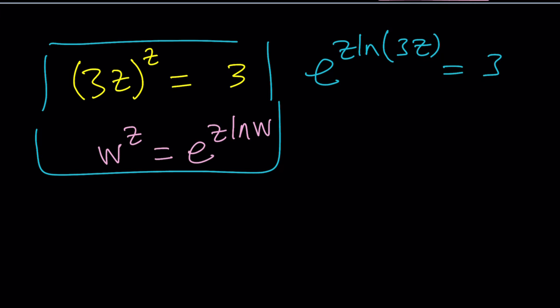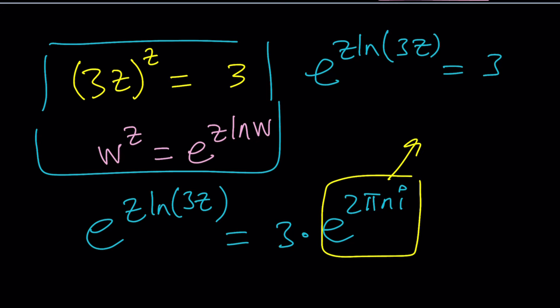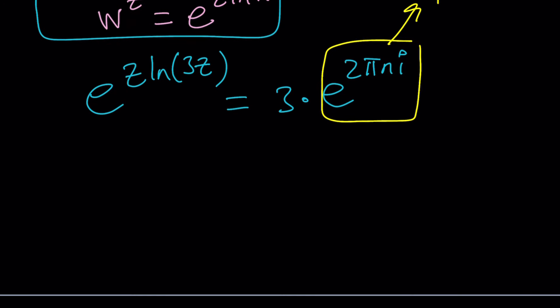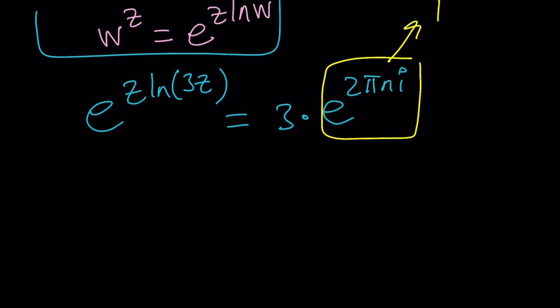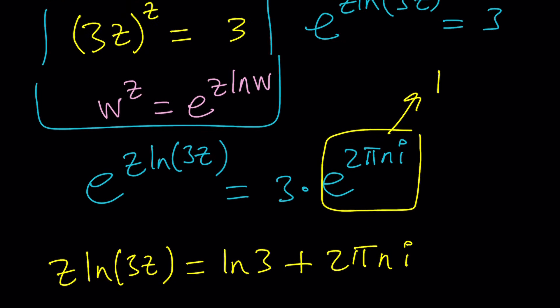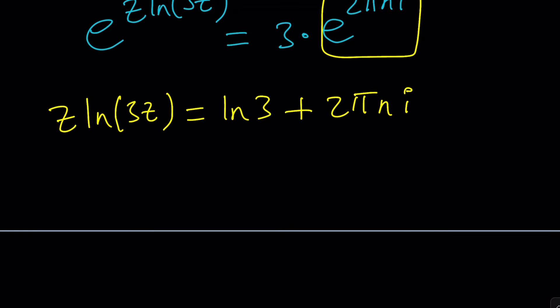And now we're going to go ahead and just plug this in. So now I have e to the power z ln 3z. And 3 can be written as 3 times e to the power 2 pi n i. That's what 1 is in the complex world, this is actually equivalent to 1 or equal to 1. Now, 3 times 1 is obviously 3. But this is nice because we have e's on both sides. And we can bring them down by using the natural log on both sides.